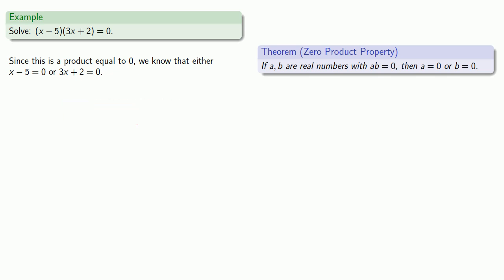But we can solve those separately. So solving x minus 5 equals zero gives us the solution x equals 5.